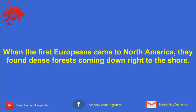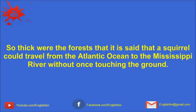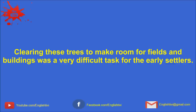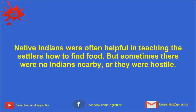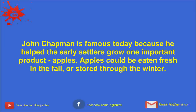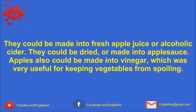When the first Europeans came to North America, they found dense forests coming down right to the shore. So thick were the forests that it was said that a squirrel could travel from the Atlantic Ocean to the Mississippi River without once touching the ground. Clearing these trees to make room for fields and buildings was a very difficult task for the early settlers. Another difficulty was finding enough food in this new land. Many European crops could not grow in this climate. Carrying and storing seeds over a long period was also risky.